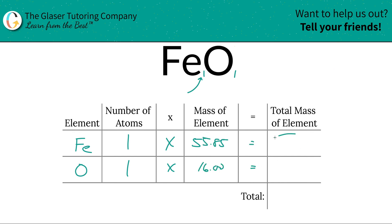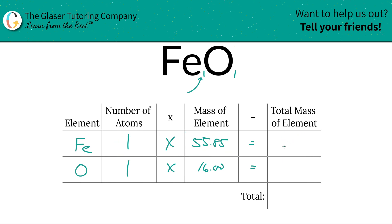All we have to do to find the total mass of the element in the compound is simply multiply the number of atoms by the mass. So this is going to be simply 55.85, and then for oxygen it's simply 16. When you add those two together, that's when you find the total. The total mass of iron 2 oxide is going to be 71.85.